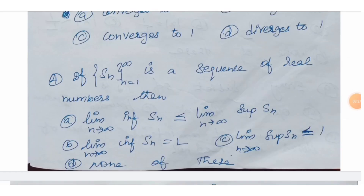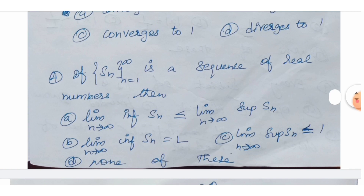Next: if the sequence Sn, n = 1 to infinity is a sequence of real numbers, then Option A: lim inf Sn ≤ lim sup Sn. Option B: lim inf Sn = L. Option C: lim sup Sn ≤ 1. Option D: none of the above.